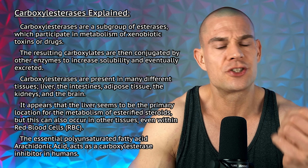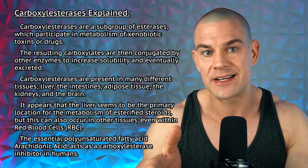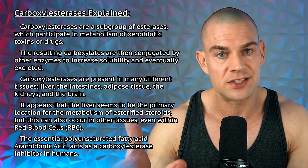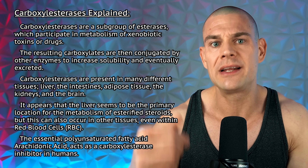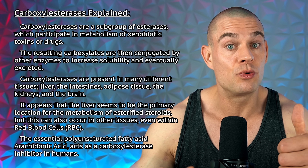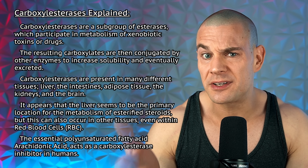Carboxylesterases are actually a superfamily of esterases — there are many different kinds. They are predominantly found in the liver, the kidneys, adipose tissue, the intestinal tract, and even the brain. The liver appears to be the primary location where esterified steroids are metabolized into biologically active steroids, but this can also occur in other tissues, even within red blood cells. The half-life of a steroid is somewhat directly correlated to the number of carbon atoms each steroid ester contains.